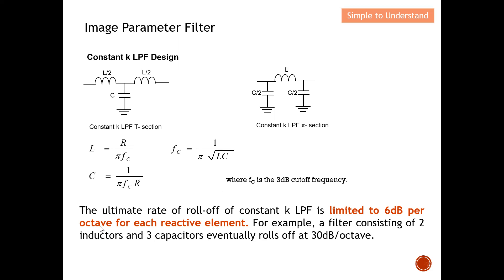The ultimate rate of roll-off of a constant K low-pass filter is limited to 6 dB per octave for each reactive element. For example, a filter with two inductors and three capacitors has five reactive elements, giving 6 × 5 = 30 dB per octave. The more reactive elements, the steeper the roll-off — though fewer elements means lower cost but a less steep slope.